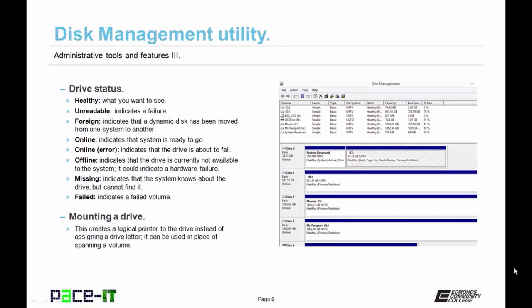There are several different drive statuses. Healthy is what you want to see. Unreadable indicates a failure. Foreign means a dynamic disk has been moved from one system to another. Online means you're ready to go. Online error indicates the drive is about to fail — do something about that. Offline means the drive is not currently available and could indicate a hardware failure. Missing means the system knows about the hard drive but can't find it. Failed is self-explanatory.